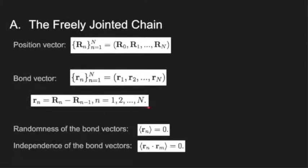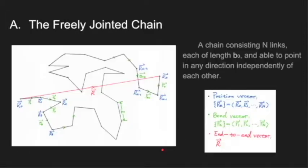Due to the randomness of the bond vector, the mean value of r_n is zero. We use angle brackets to denote the mean value. Also, from the independency of the bond vectors, we know that the mean value of the interaction between one bond and another is zero. So now we can see how our model looks. After knowing these basic notations, we are getting familiar with this freely jointed chain.